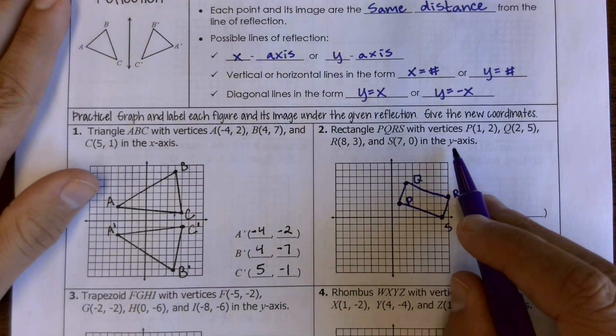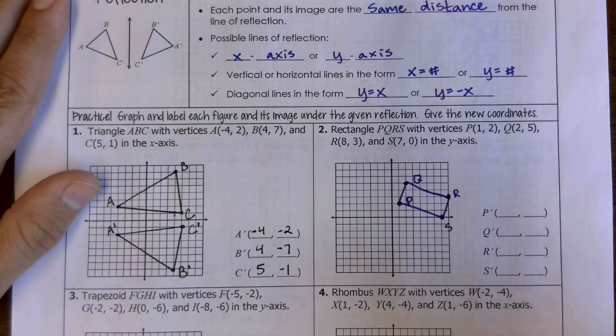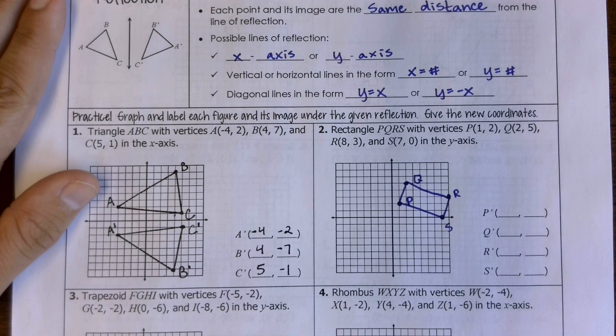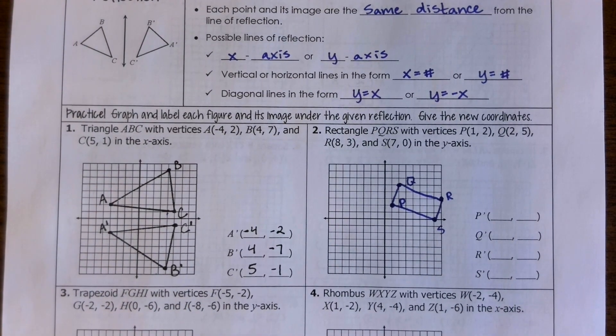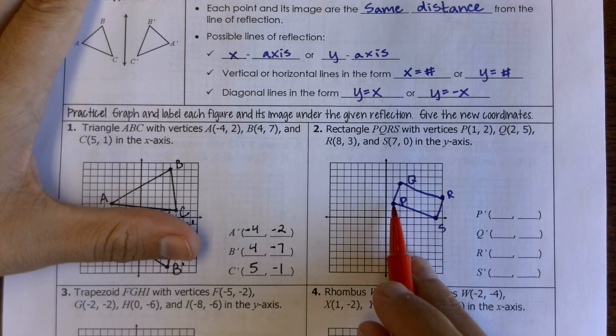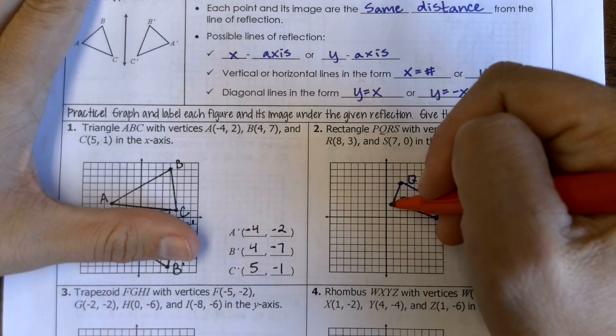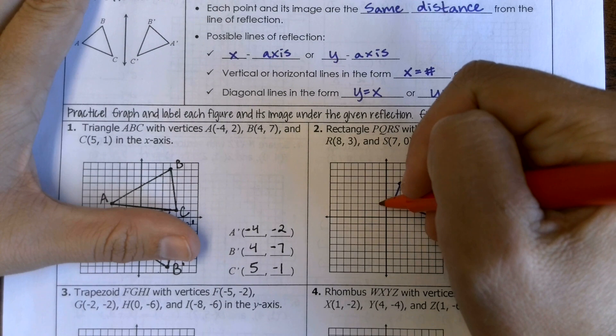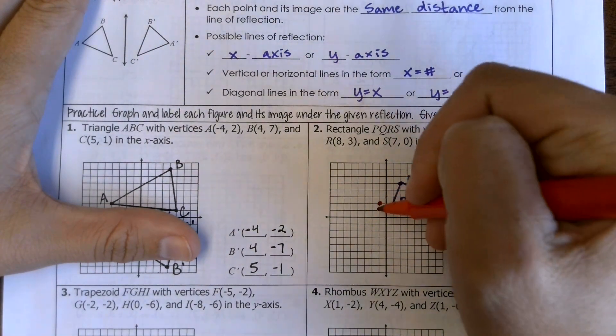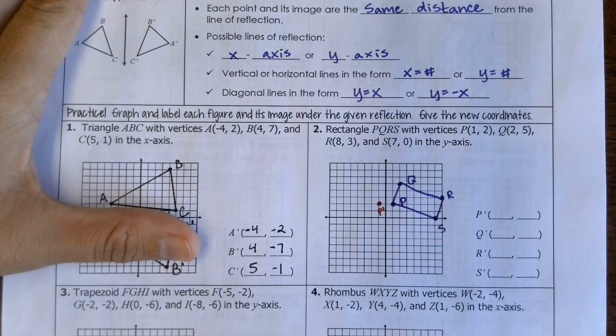So this one is different. We are reflecting about the y-axis. So we've got a couple of ways that we can go about it, and you kind of notice the pattern here. So instead of being equidistant from the x-axis, we'll be equidistant from the y-axis. So I'm going to start with P. Since it was one unit from the y-axis, now it's going to be one unit away on the other side. So there's my P prime.